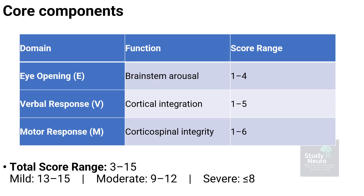The Glasgow Coma Scale is built on three key domains, each representing a distinct aspect of neurological function. Eye-opening, or E, reflects brain stem arousal and is scored from one to four. Verbal response, or V, assesses cortical integration — the brain's ability to generate and organize speech — and is scored from one to five. Motor response, or M, measures corticospinal integrity — the capacity to obey commands or react purposefully to stimuli — and is scored from one to six. The total score ranges from three to 15: scores of 13–15 indicate mild brain injury, 9–12 moderate injury, and eight or below signifies severe brain injury or coma.